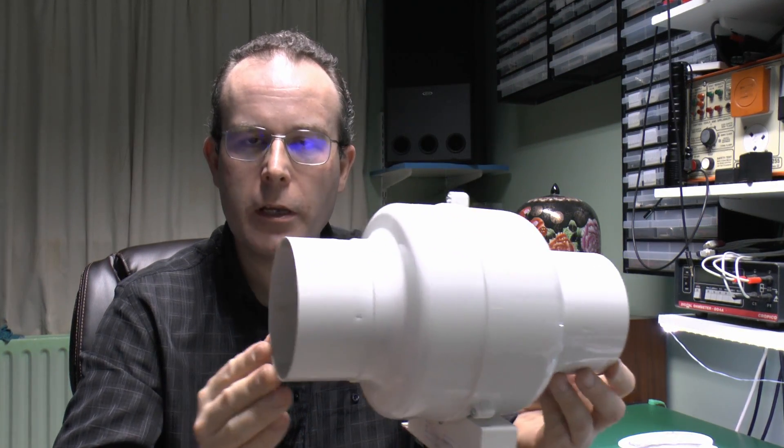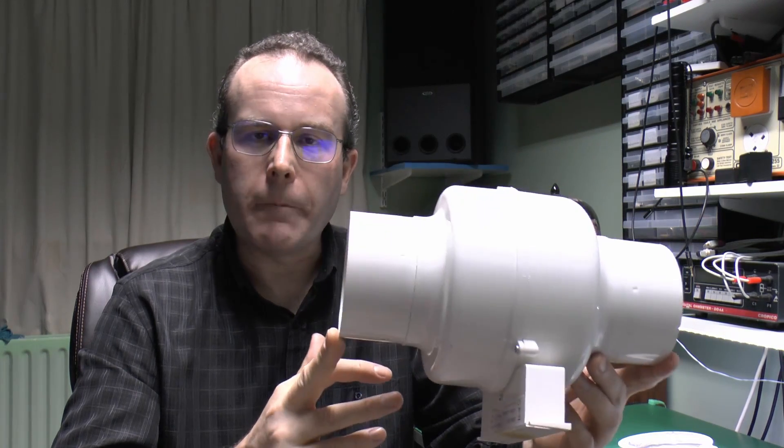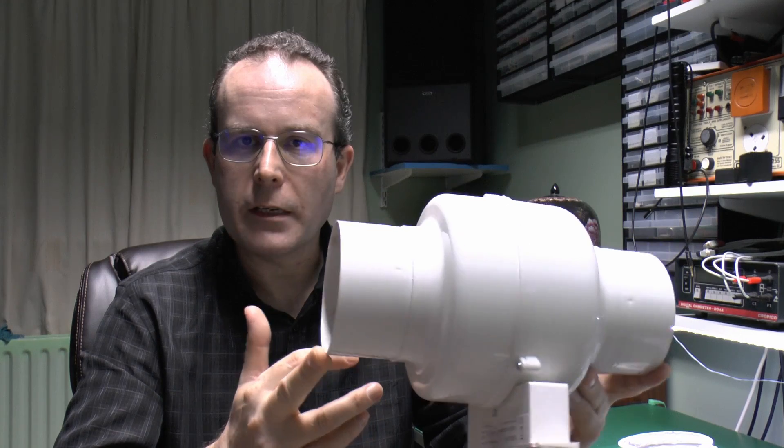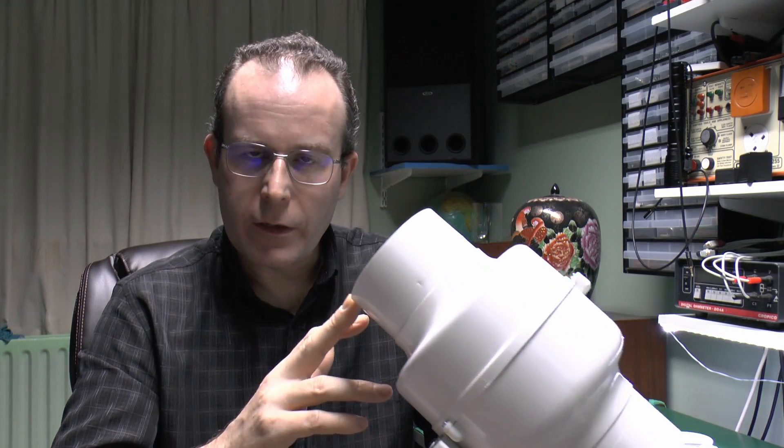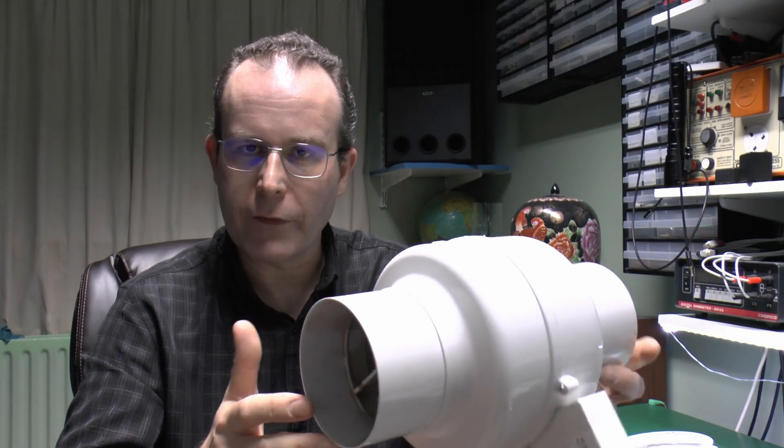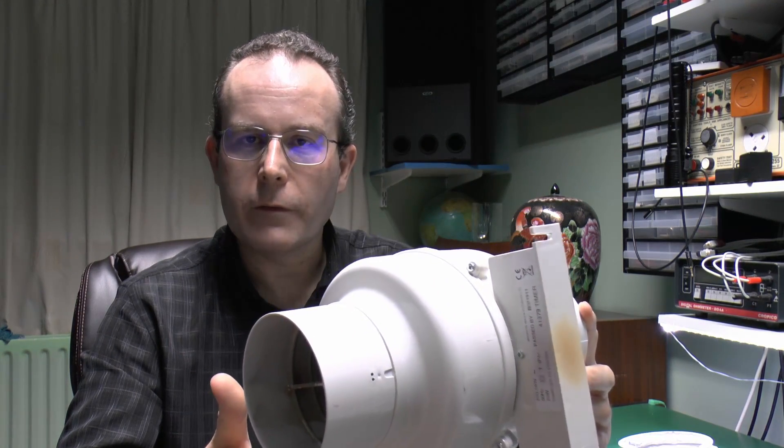Now this particular one is a timer model, meaning that once it's started going, you can keep it going and it will automatically turn off after a delay of say 10 or 15 minutes or whatever. And these are quite often attached to the lighting, so that when you go in the room and turn the light on, the fan will start going. And then when the light's turned off, the fan keeps going for say another 10-15 minutes or whatever, and then switches off automatically.